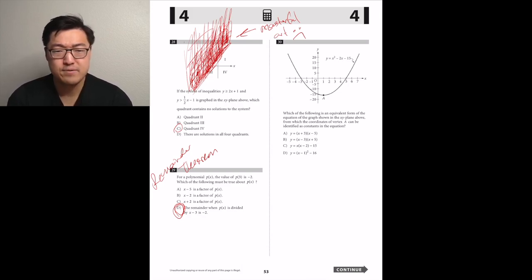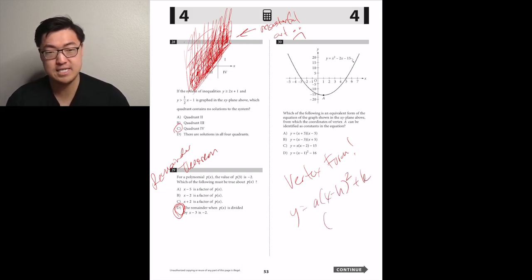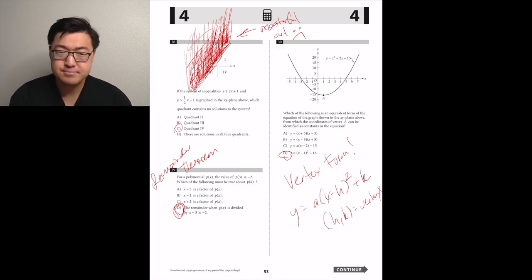Number 30. Which of the following is an equivalent form of the equation of the graph shown in the XY plane above, from which the coordinates of vertex A can be identified as constants in the equation? Well, the vertex, the formula that shows the vertex, the coordinates of the vertex as constants in the equation, constants meaning like just as the visible numbers that you can see, is vertex formula. The vertex formula goes Y equals A times parentheses X minus H squared plus K. The only answer choice that's written in vertex form is D, so I believe that's the answer.